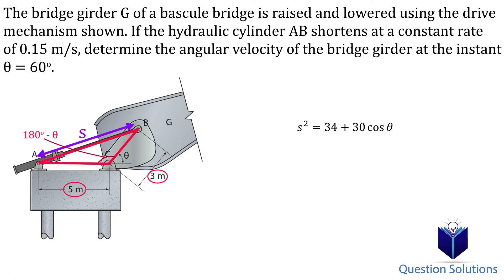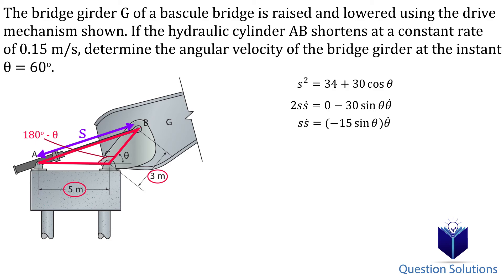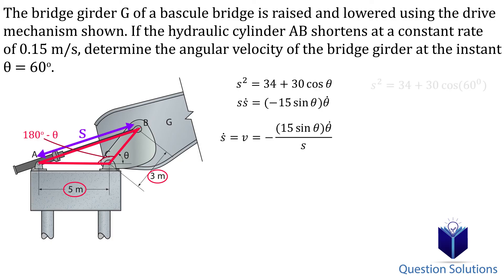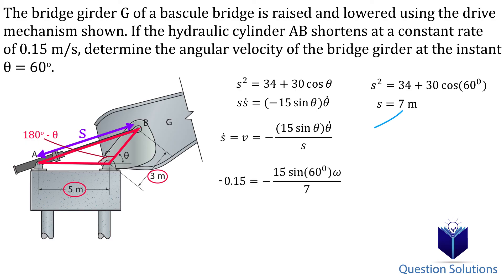Now we can take the derivative — just once since the question asks only for angular velocity. We isolate for velocity, which is Ṡ. Before plugging in values, we need to find the length S when the angle is 60 degrees using the cosine law equation. Plugging in 60 degrees gives us the length. We then plug in this length, the 60-degree angle, and the cylinder velocity of 0.15 meters per second to solve for the angular velocity.